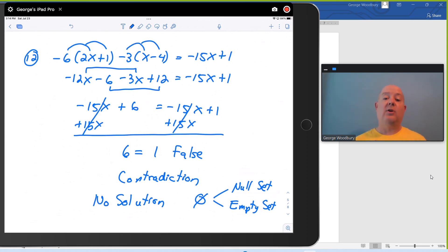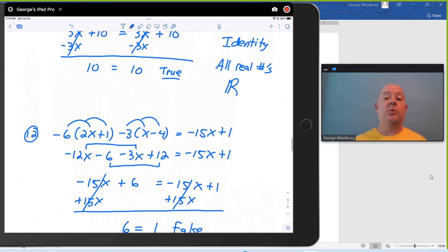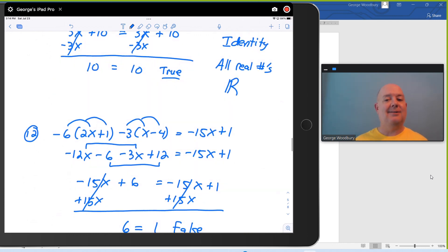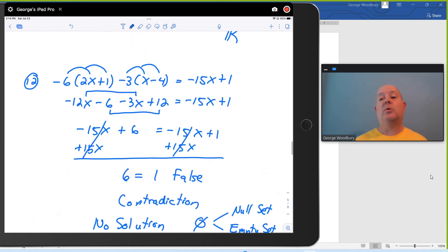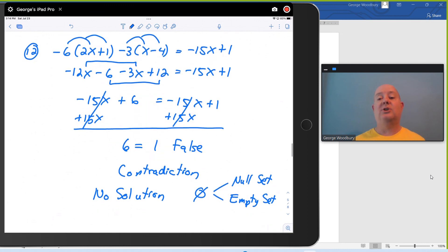So when the variables disappear in the first problem, we were left with the true statement. That's an identity. The solution set is the set of all real numbers. In the second problem, we were left with a statement that was false. 6 equals 1. That's not true. That's a contradiction. And that means your equation has no solutions to it. All right. In the next video, we'll talk about literal equations, which is where we solve an equation for one variable in terms of other variables in the same equation.